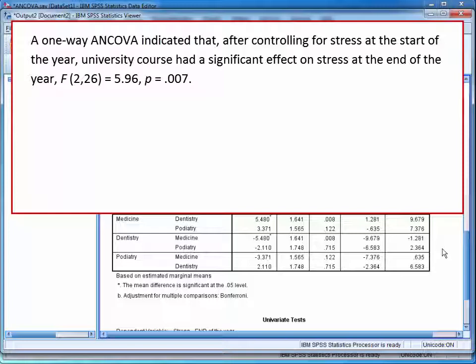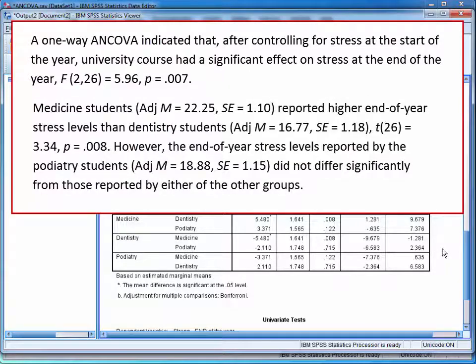You would then report your F statistics, DF, and p-value. You could then report the results of the post-hoc testing from the pairwise comparisons table.